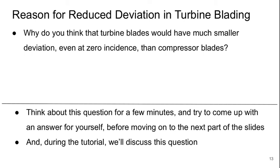So I've alluded to this a little bit, but take a minute and think about if you can sort of answer in your own words, why is it that you think turbine blades would have much smaller deviation even at zero incidence than compressor blades do? So try to come up with an answer before you move on to the next part of the video.